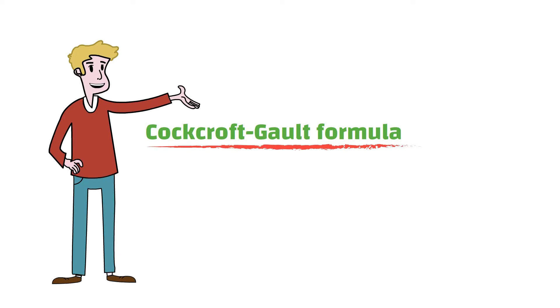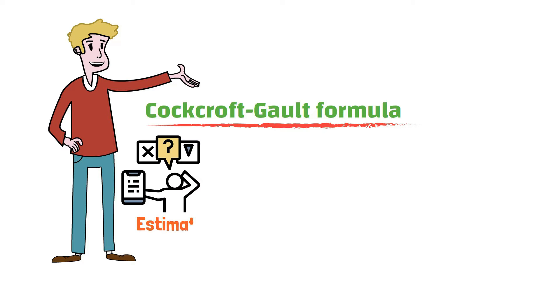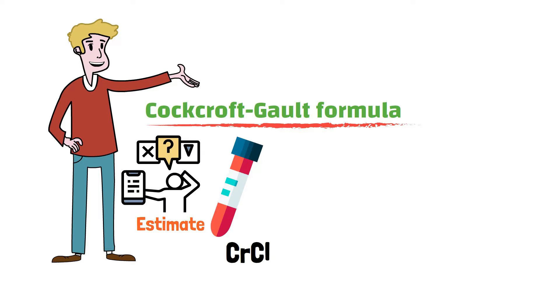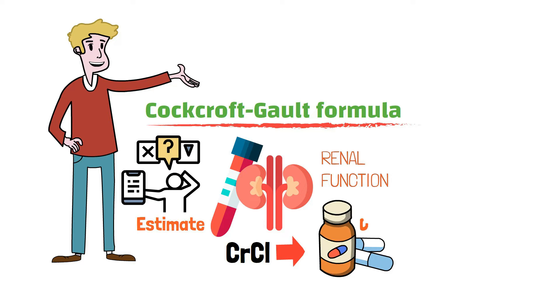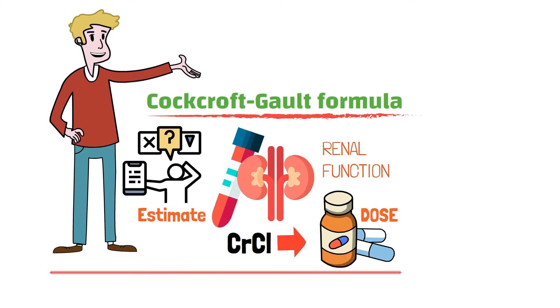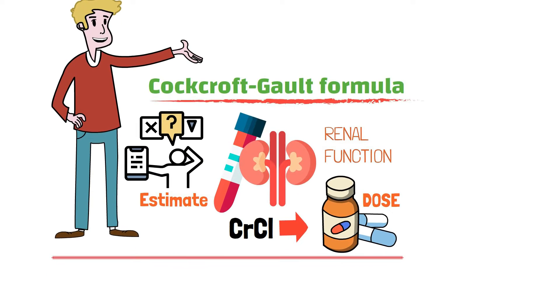The Cockcroft-Gault formula is a widely used formula for estimating a patient's creatinine clearance, which is a measure of kidney function. This creatinine clearance value is then used to calculate the appropriate medication dose for the patient.